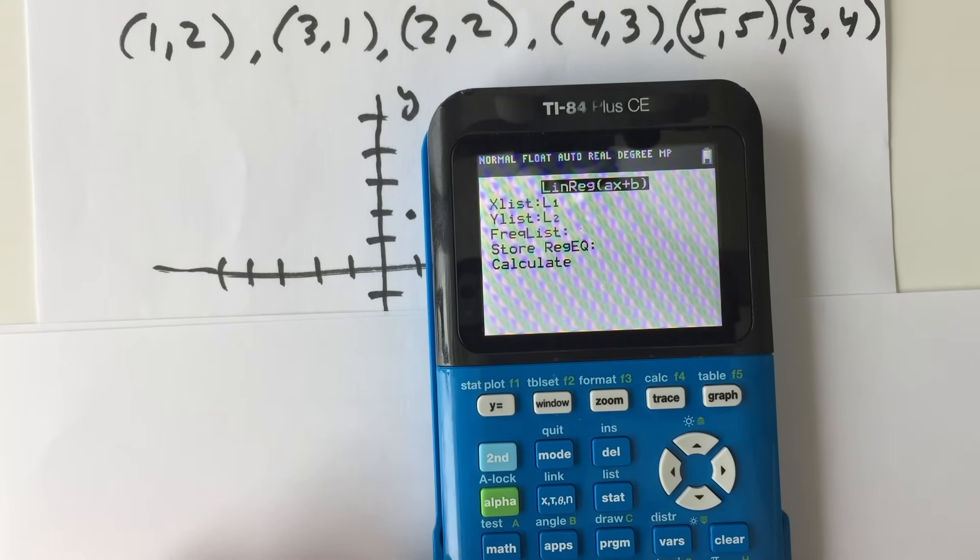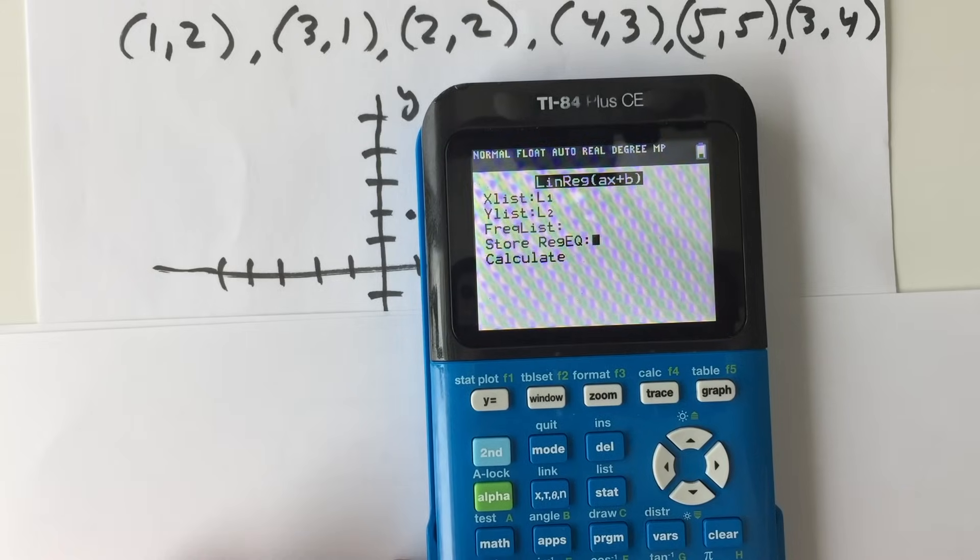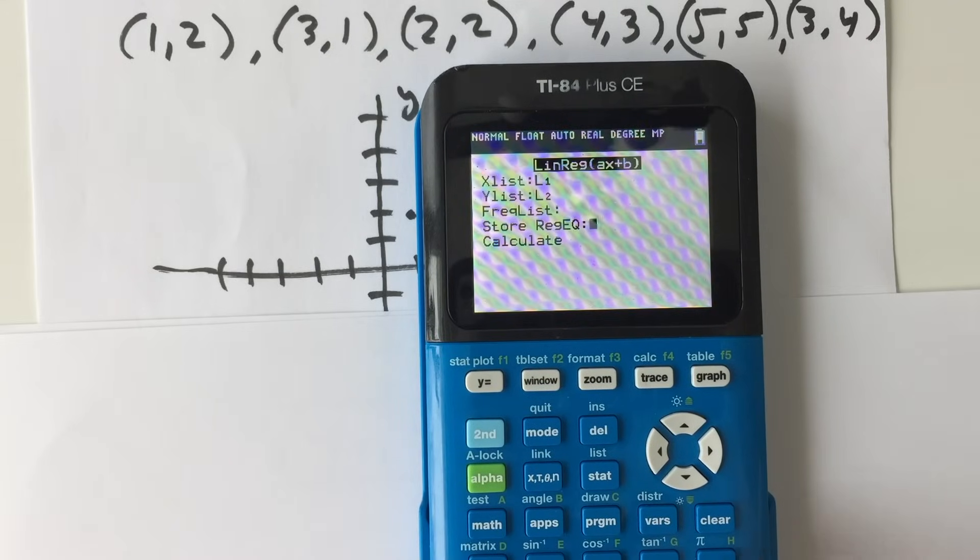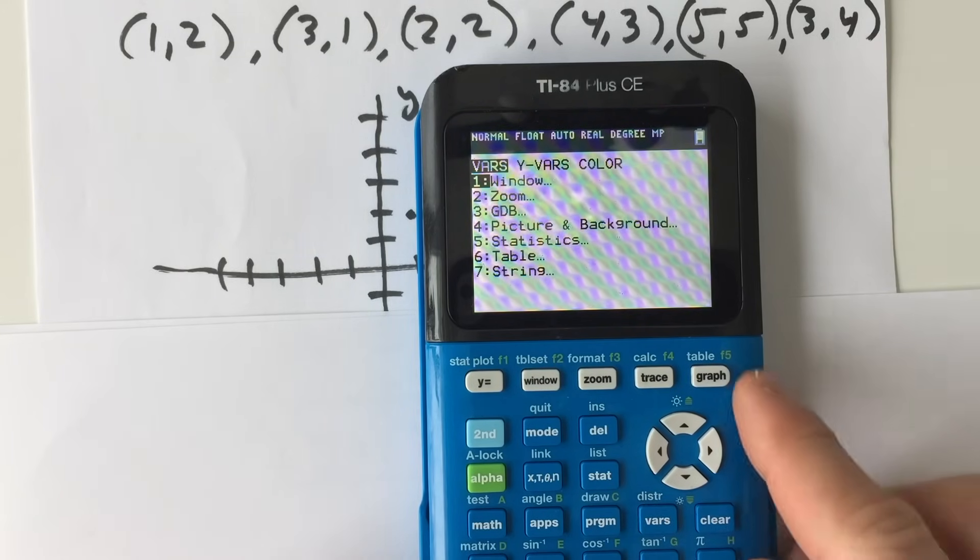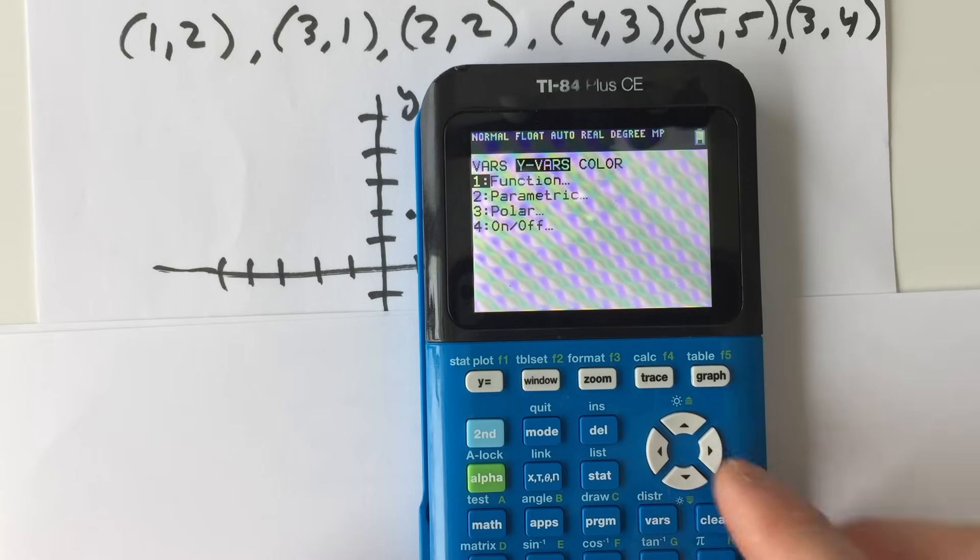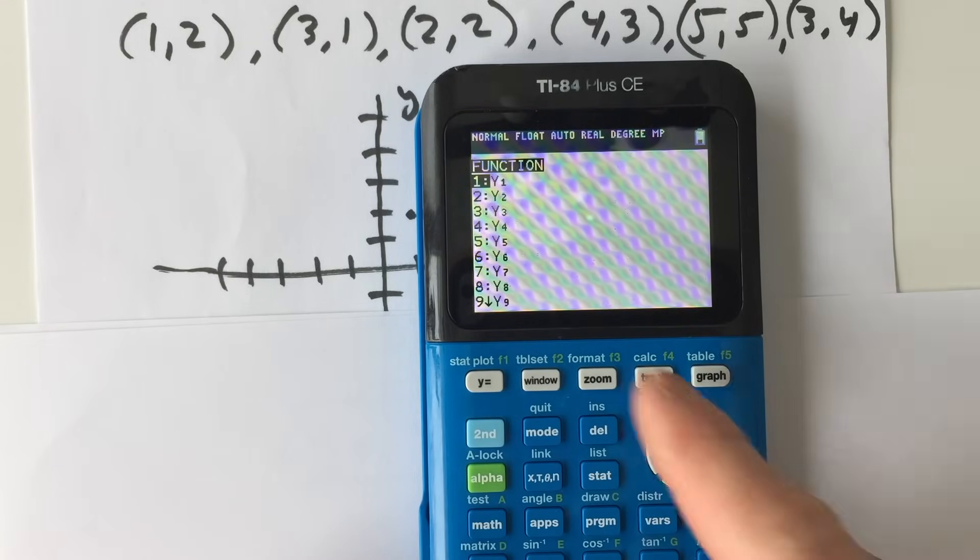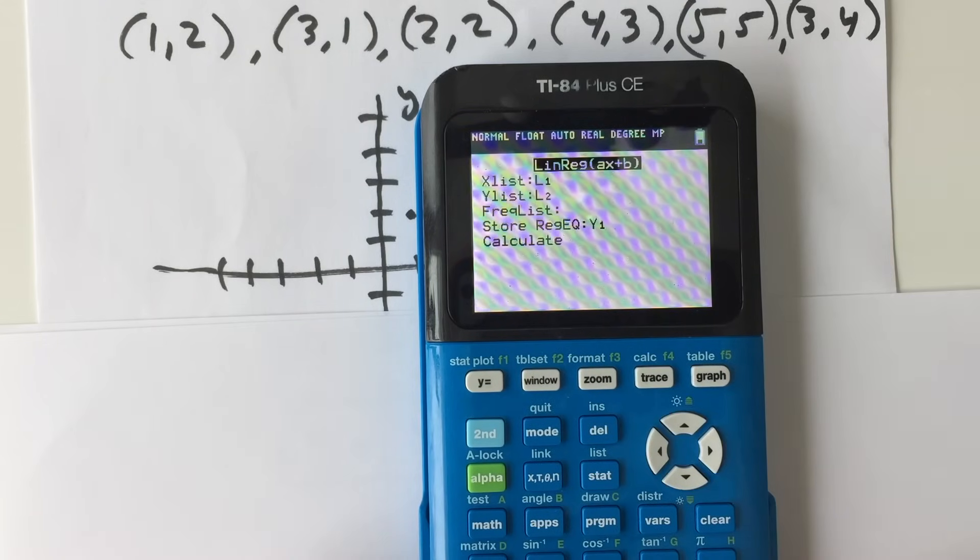And then list one and list two are the lists that we're using, and store regression equation. What you can do is you can go over here to where it says VARS, press that and go over to YVARS, arrow to the right, function, enter, and we're going to store it under Y1. So enter, and then calculate, enter again.